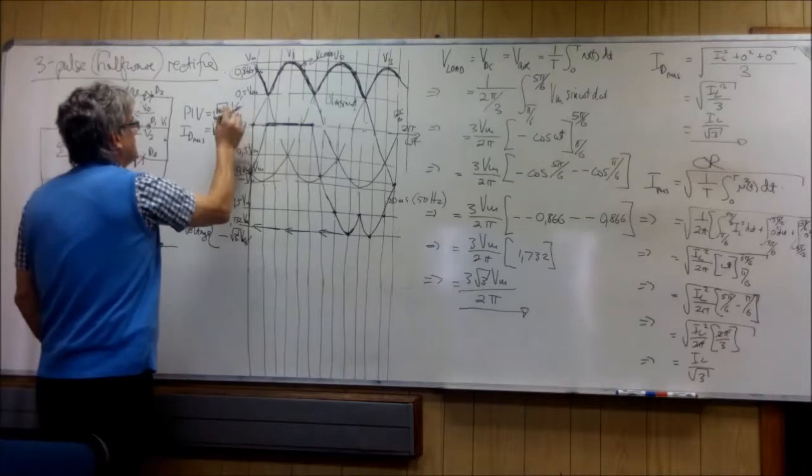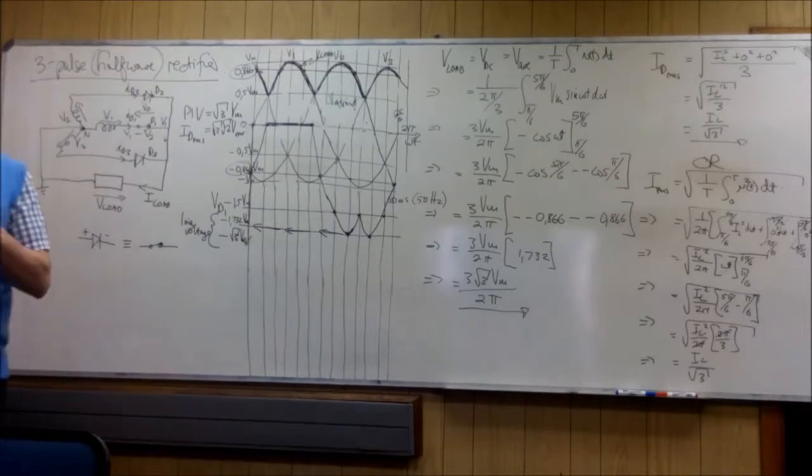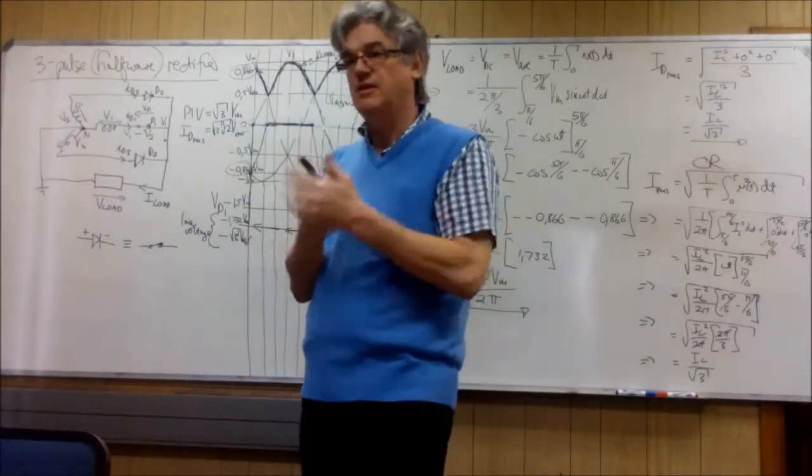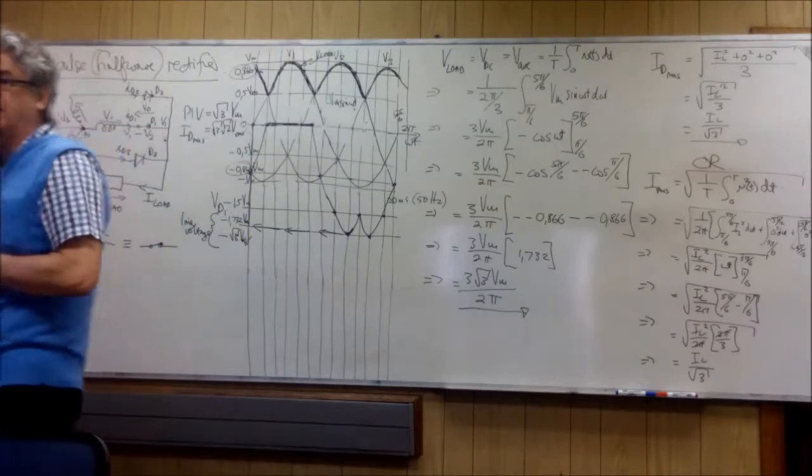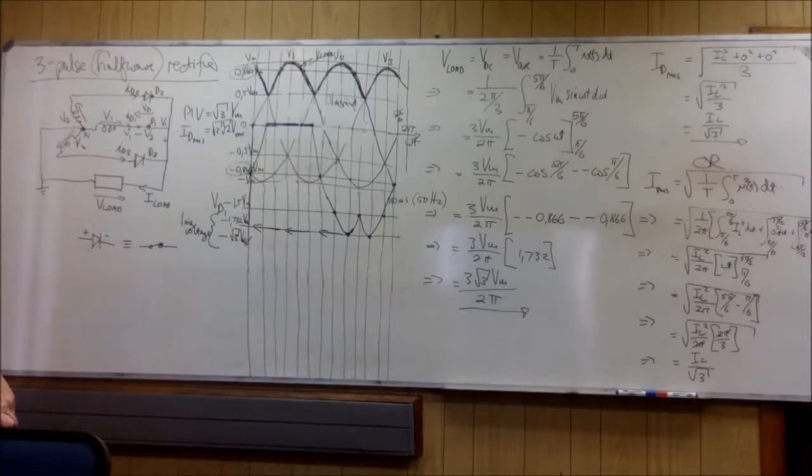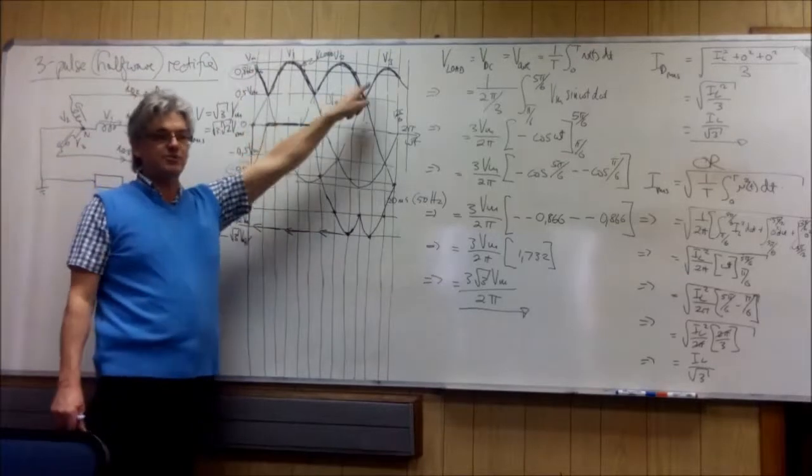Square root of 3, square root of 2 times Vrms. Have you got it? Will you be able to determine the peak inverse voltage of a 3-pulse rectifier diode? Will you be able to determine the current rating of that diode? Will you be able to sketch the graphs? Will you be able to sketch the circuit? Will you be able to determine what is the ripple frequency? Do you understand why it is called 3-pulse?